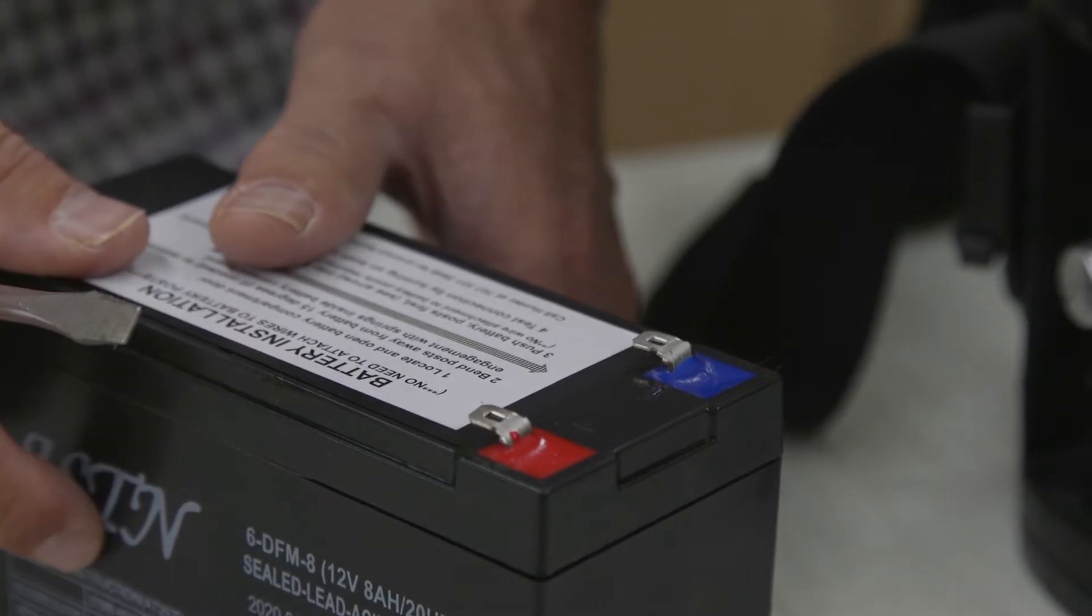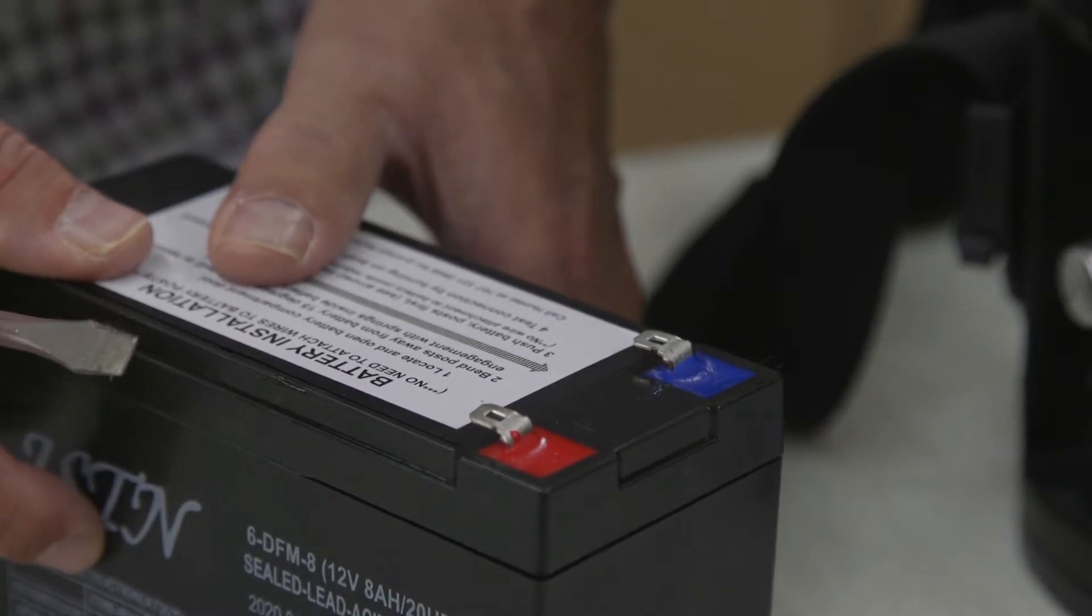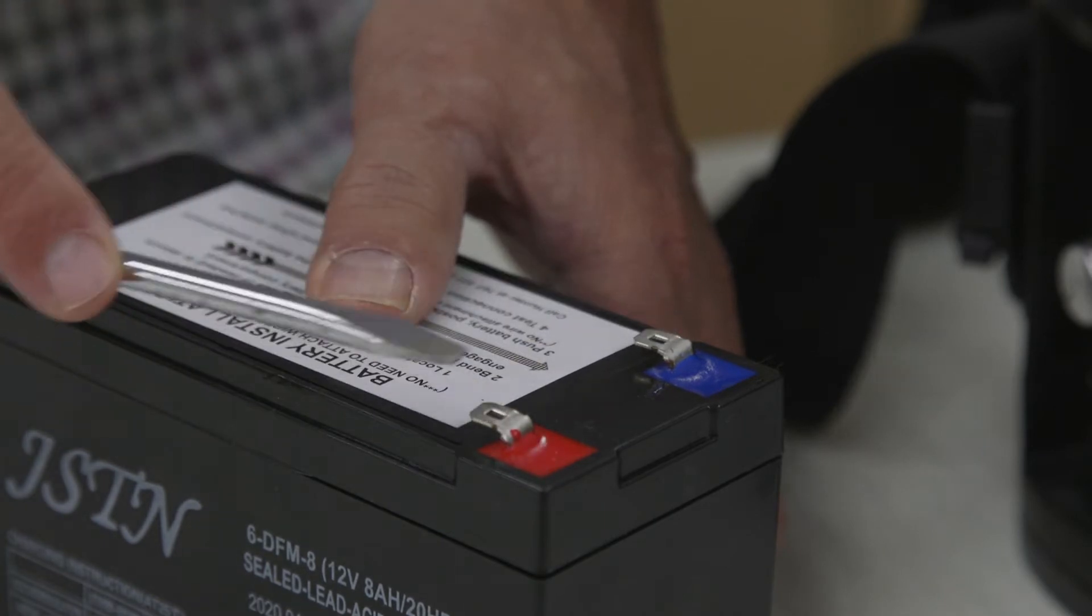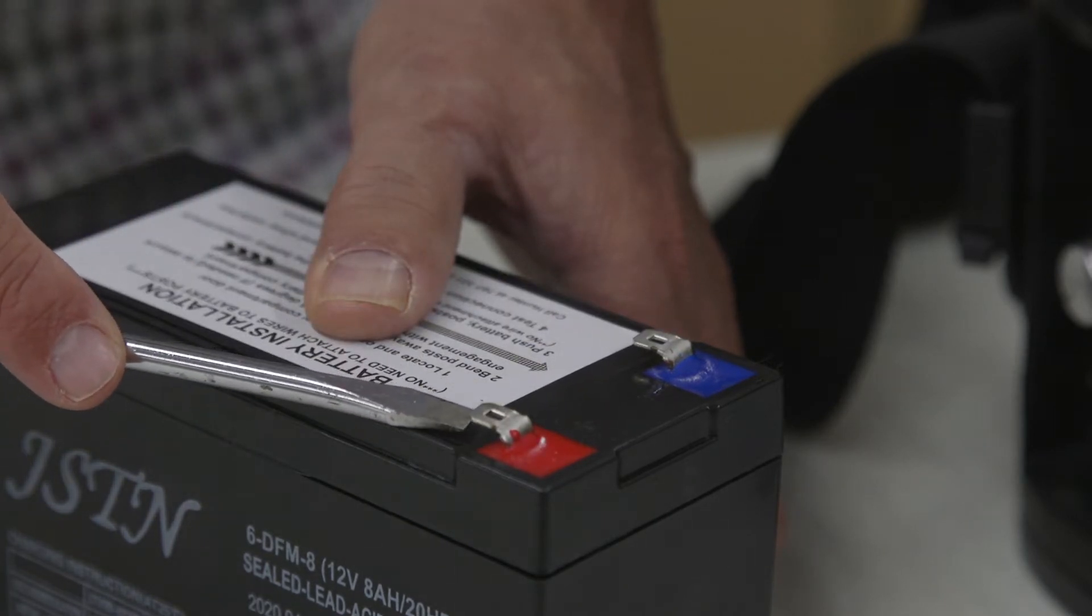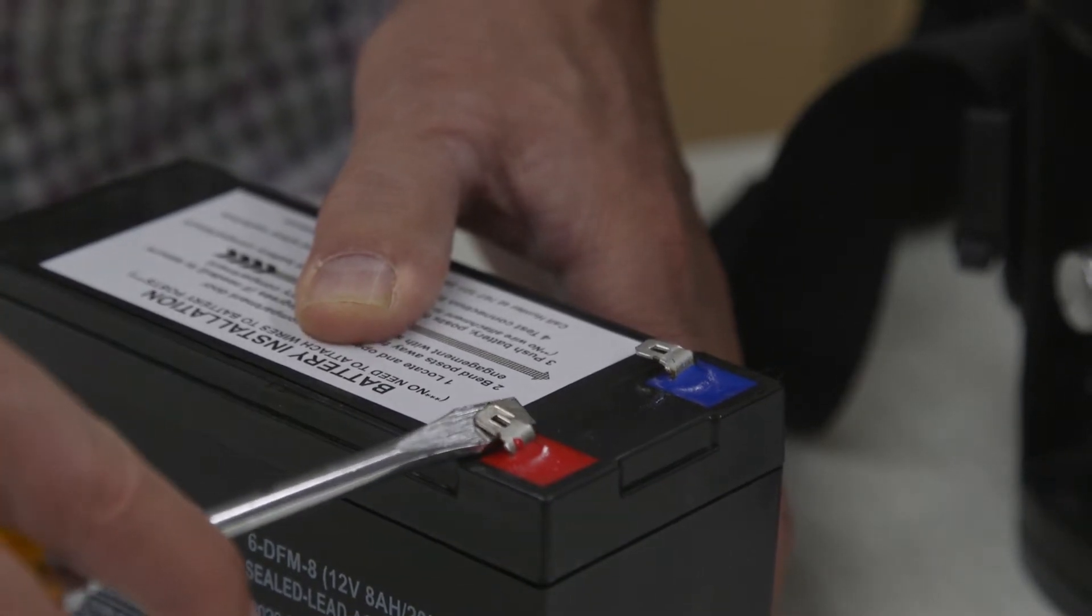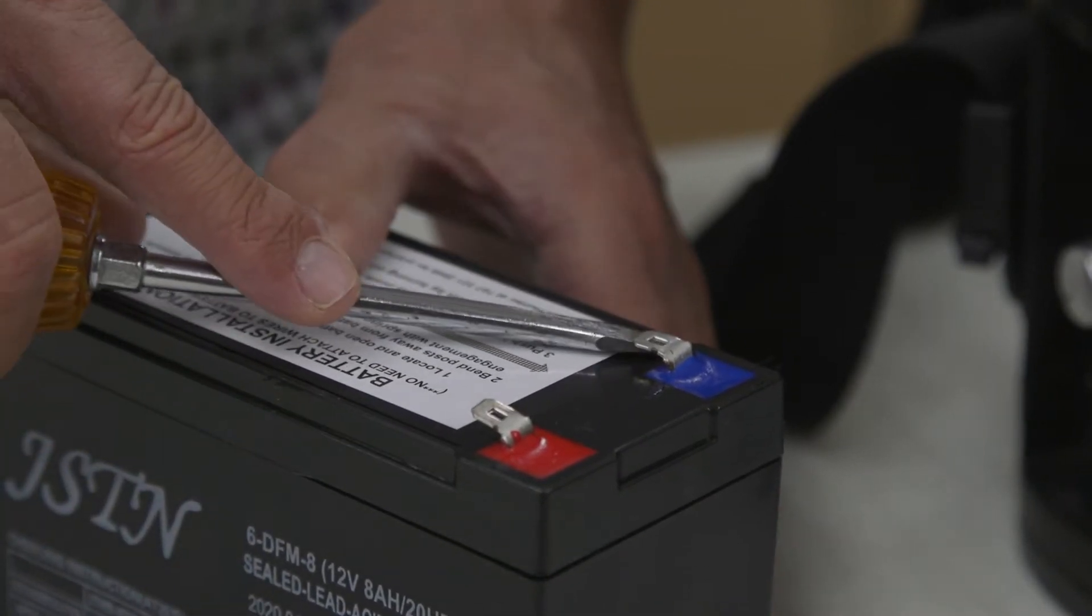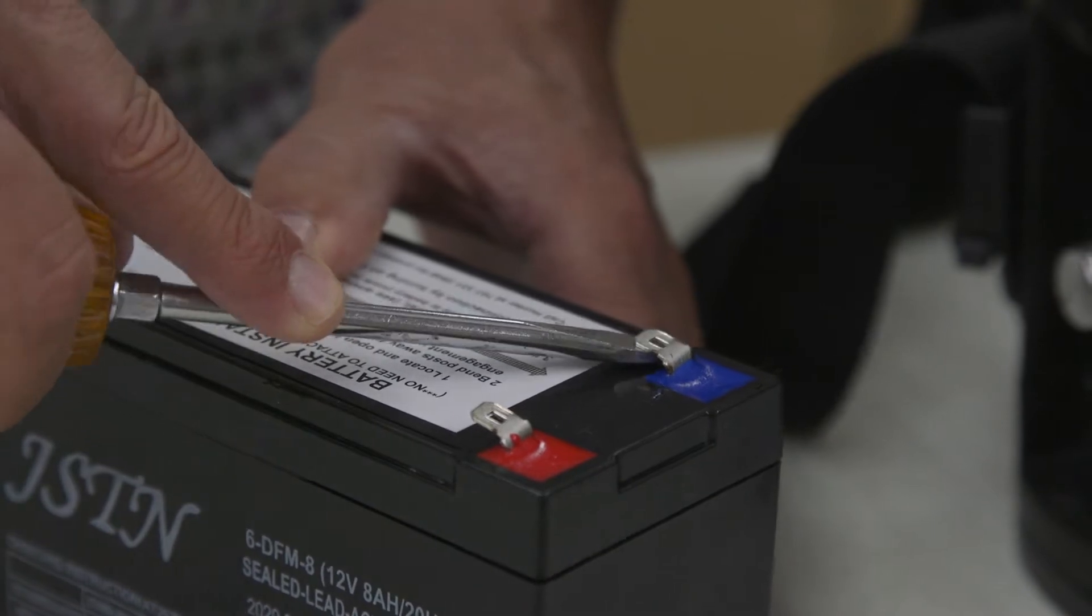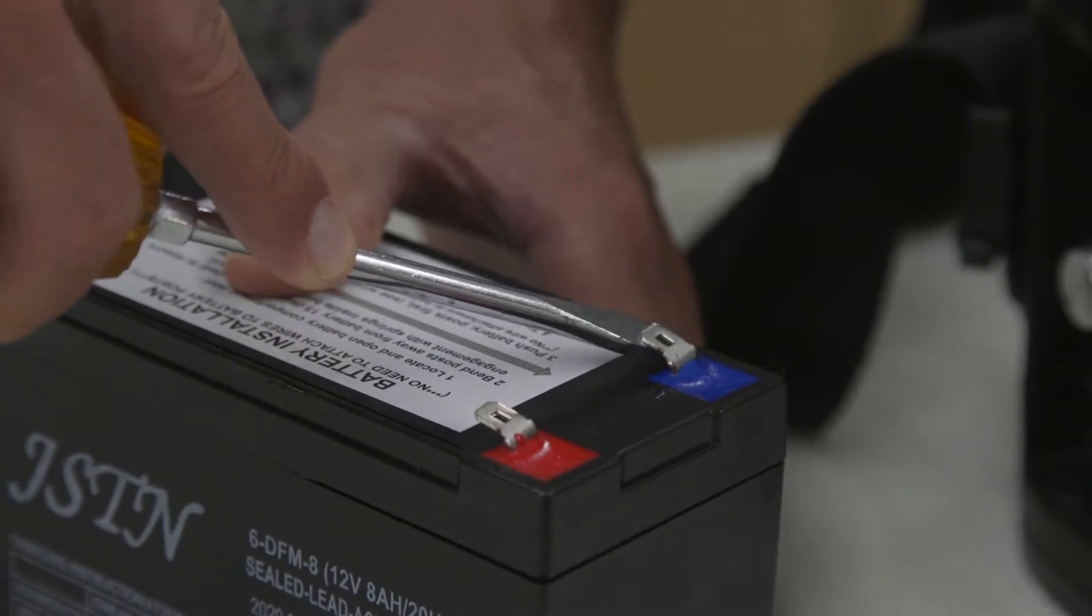The number one reason why you get no power and no voltmeter lights is because the J2 terminals are bent down and they're not making contact with your spring plates. So all you need to do is bend these up to at least 15 degrees. Make sure you don't short them because that's not good for the battery.